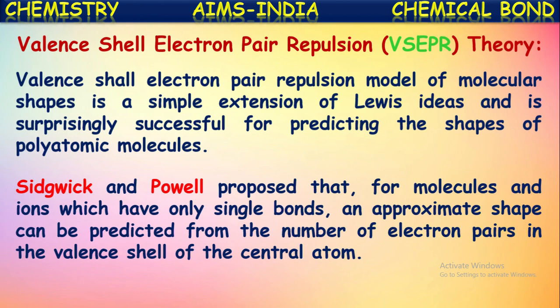Sidgwick and Powell proposed that for molecules and ions which have only single bonds, an approximate shape can be predicted from the number of electron pairs in the valence shell of the central atom. So the shape of a molecule can be predicted based upon the number of electron pairs present on the central atom of that molecule.